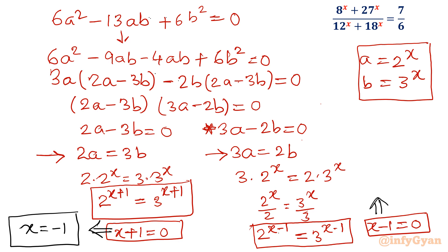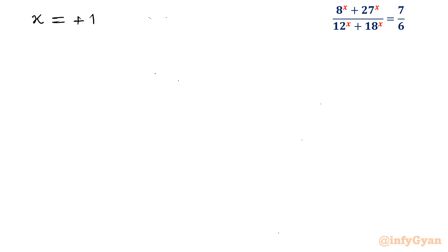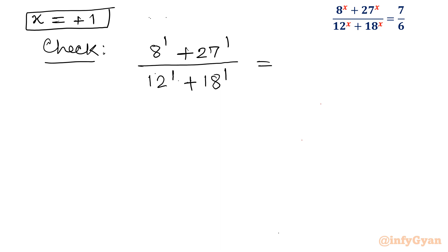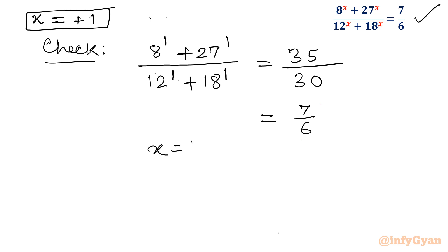So we have two solutions: x equals plus 1 and x equals minus 1. Let us verify. Check for x equals plus 1: 8 power 1 plus 27 power 1 over 12 power 1 plus 18 power 1 equals 8 plus 27 over 12 plus 18, which is 35 over 30. We can write this value as 7 over 6, which is our right-hand side. So x equals 1 is confirmed as a solution.